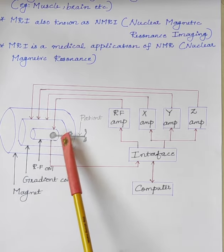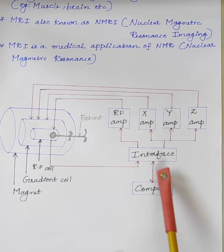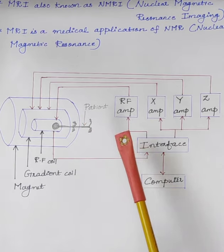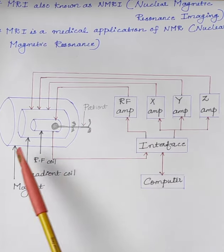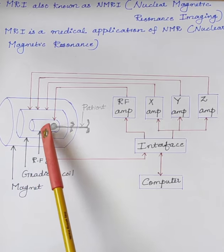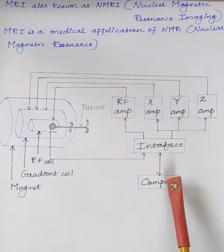These are used for making detailed images of the body tissues. The main components of an MRI scanner are magnet, gradient coil, radiofrequency coil, and a computer.